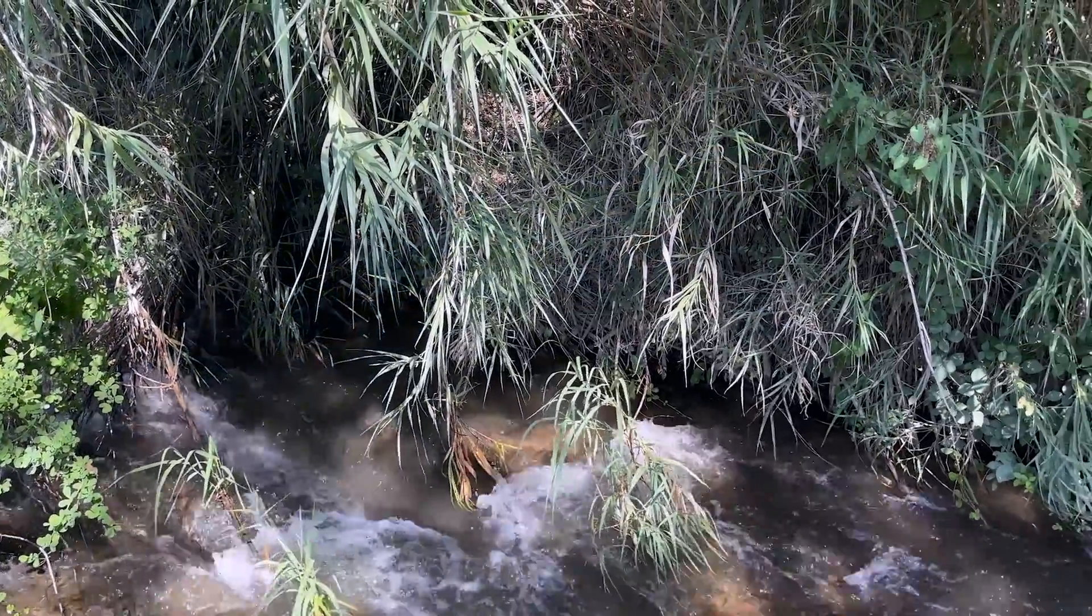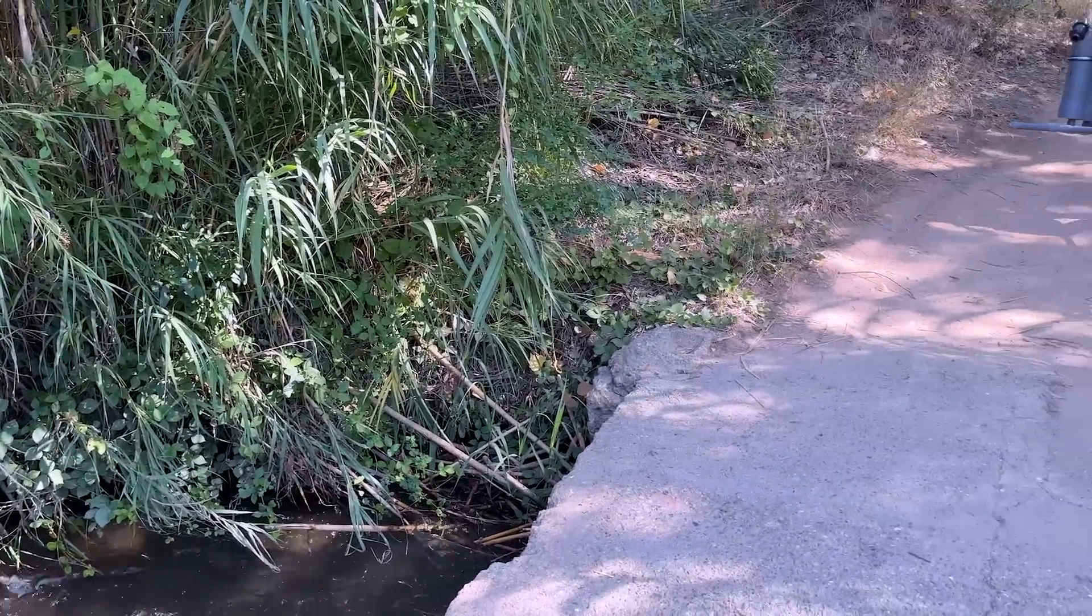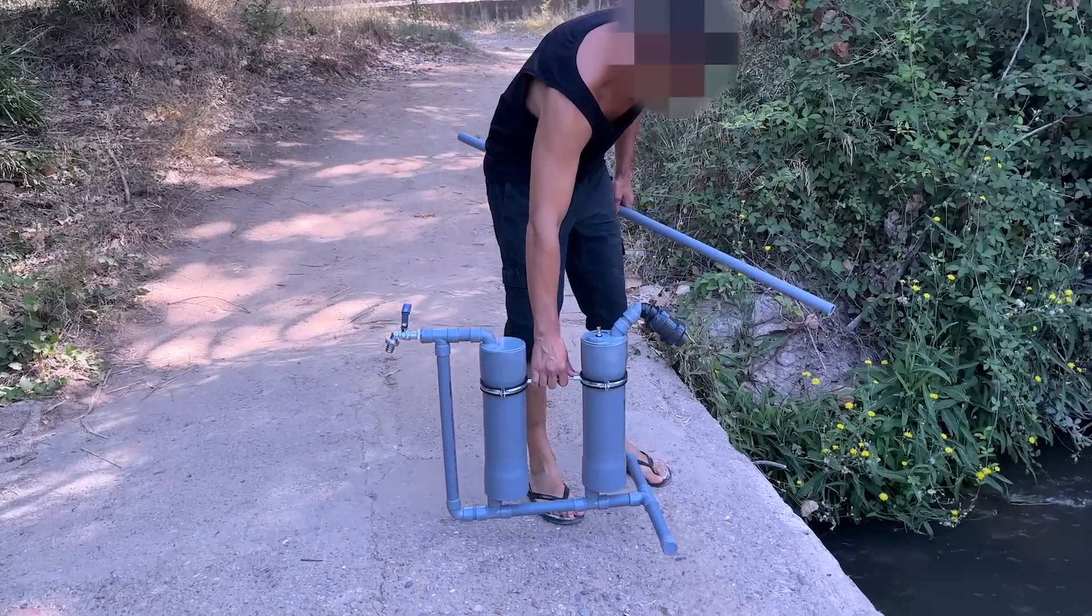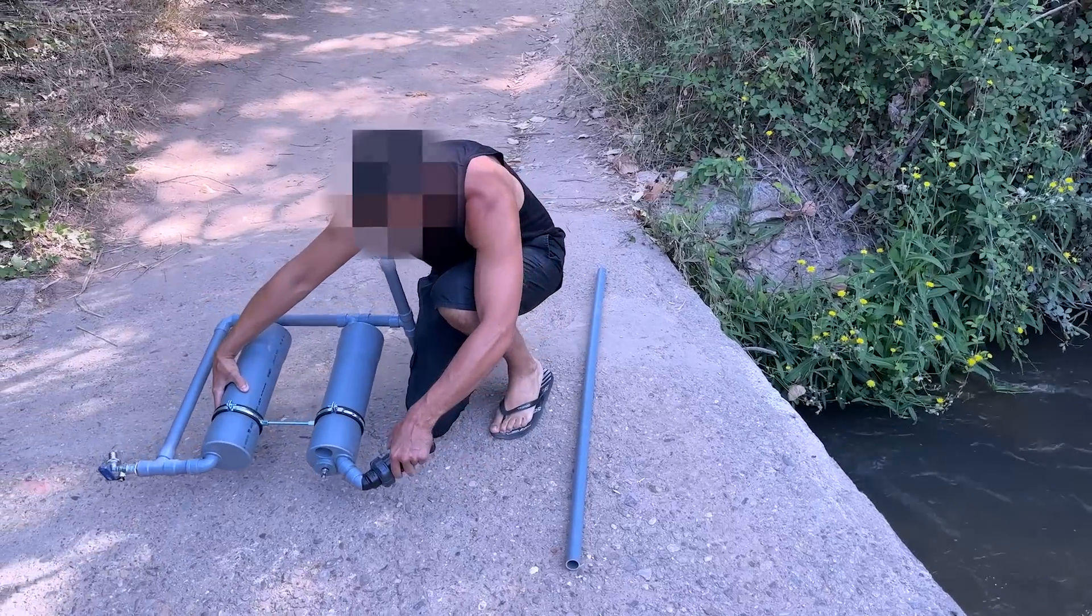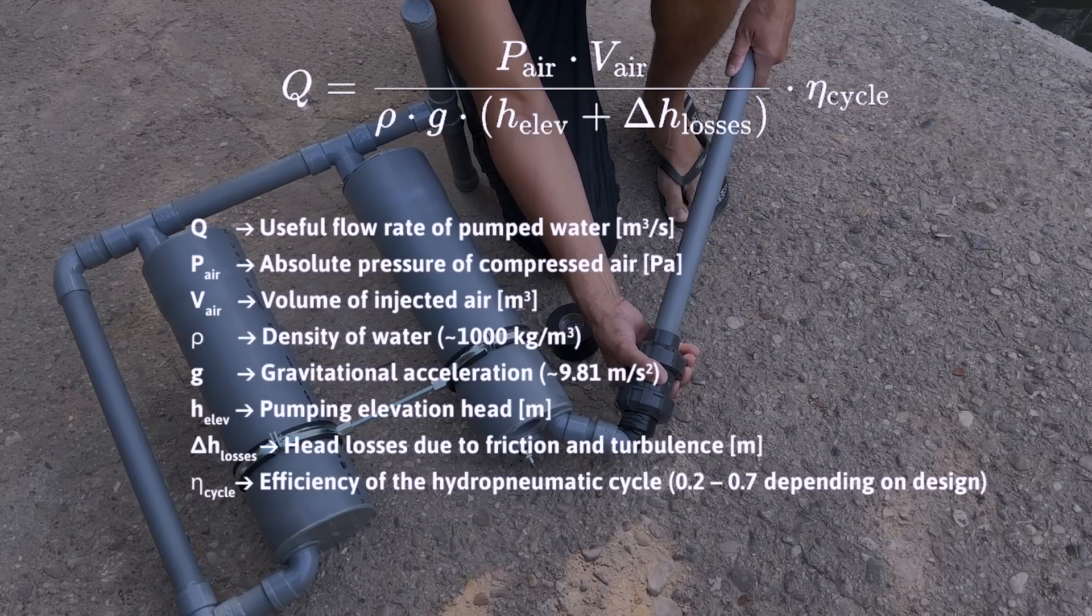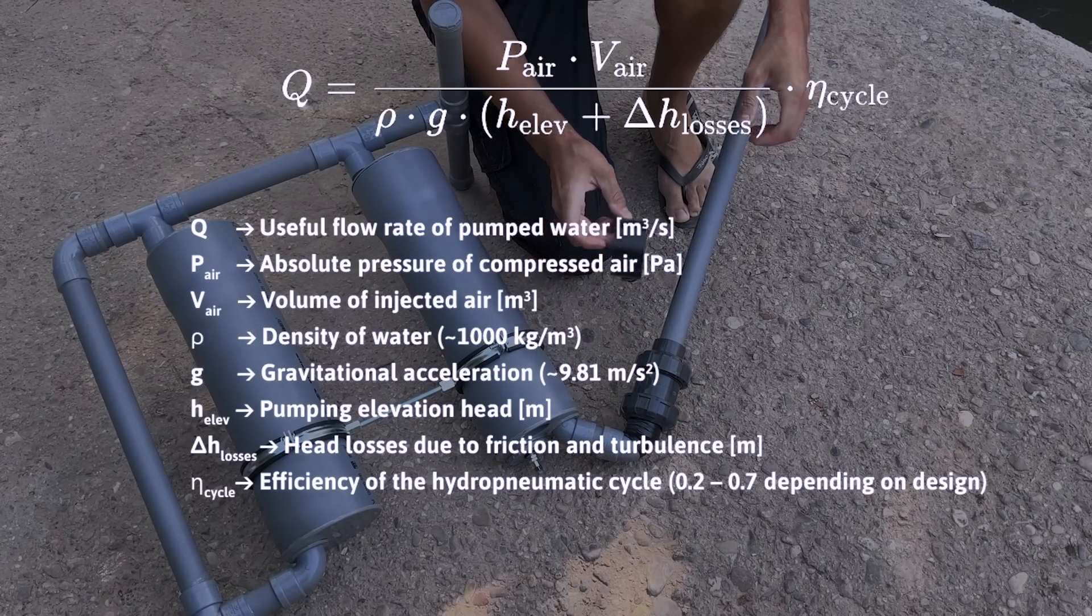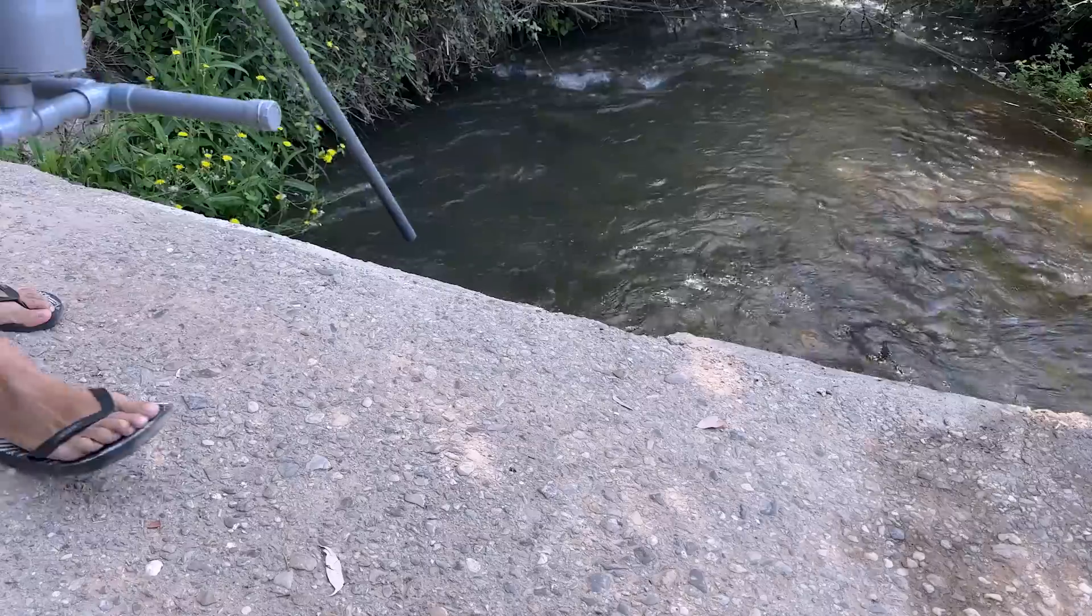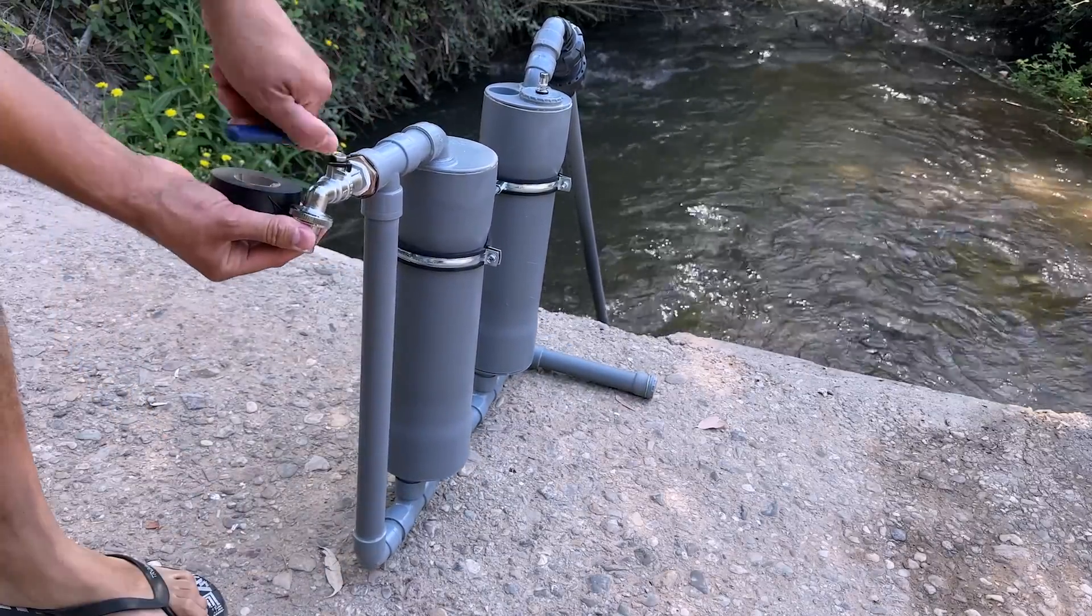Let's explain the operating principle of the HCPL1. The system is based on an energy balance where compressed air pressure propels a useful volume of water to a given height, adjusted for system losses and the efficiency of the hydropneumatic cycle. This formula summarizes how HCPL1 transforms pneumatic enthalpy into hydraulic flow. This is a pulsating hydropneumatic system that recycles its own internal energy through pressure waves and controlled cavitation phenomena.